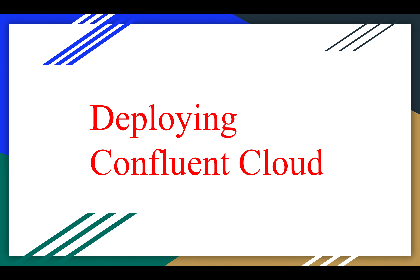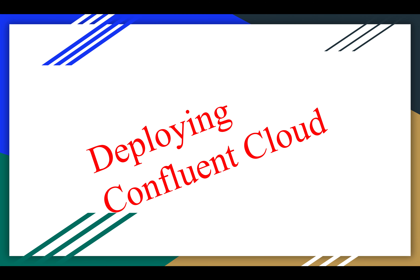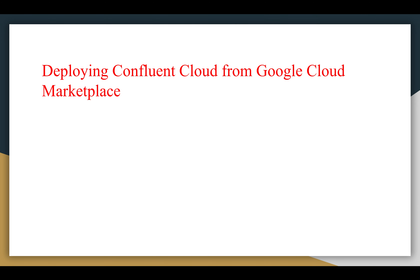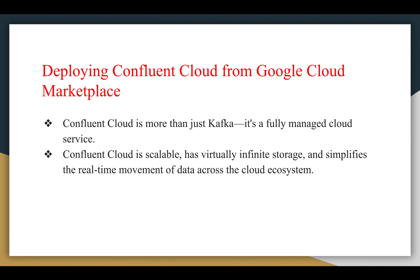Hi friends, hope you are doing great. Today we are going to see deploying Confluent Cloud from the Google Cloud Marketplace. Before seeing Confluent Cloud, we will cover what Apache Kafka is — an open-source distributed event streaming platform used by thousands of companies for high-performance data pipelines and streaming analytics. Confluent Cloud is the only cloud Kafka service with enterprise-grade features, security, and zero ops burden — stream data on any cloud, at any scale.